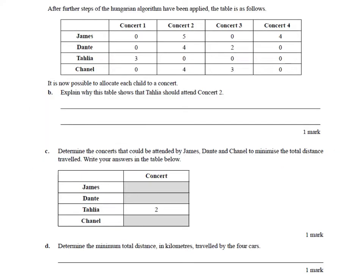Now after further steps of the Hungarian algorithm have been applied, the table is as follows. It is now possible to allocate each child to a concert. They've completed the Hungarian algorithm here, reducing everything that's required. Part B asks us to explain why this table shows that Talia should attend concert 2. If we look at Talia, she has three possible concerts that she could go to because she has a 0 in concert 2, concert 3, and concert 4. But they want to know why she has to go to concert 2.